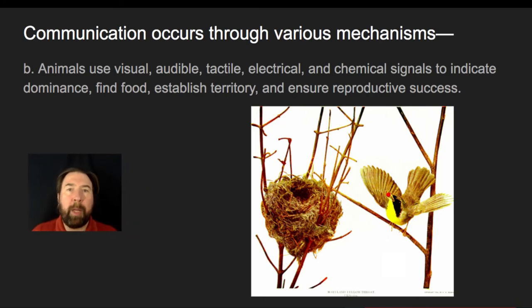We also know that communication through visual, audible, tactile, electrical, chemical signals will indicate the ability to dominate over others, to find food, to establish territory, to ensure reproductive success. These are all examples of ways that during mating, usually typically the male is trying to show off in order to attract a female in order to pass on those genes. And we can see a lot of these behaviors. Birds are commonly used in this case, but animals do all sorts of examples of communicating about their fitness in order to try to attract mates and therefore passing on the genes.